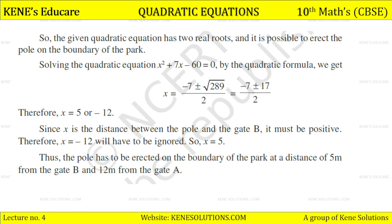Since the discriminant is positive, the given quadratic equation has two real roots and it is possible to erect the pole. Solving x² + 7x − 60 = 0 using the quadratic formula with D = 289 = 17²: x = (−7 ± 17) / 2. This gives x = (−7+17)/2 = 5 or x = (−7−17)/2 = −12. Since x is a distance it must be positive, so x = 5. The pole is 5 meters from gate B and 12 meters from gate A.